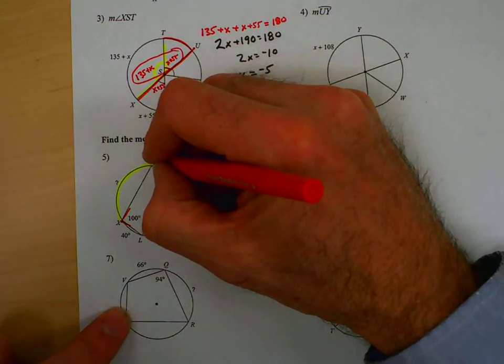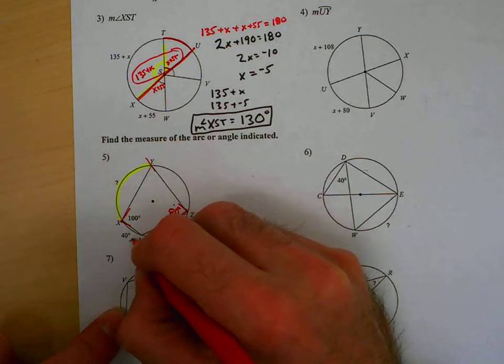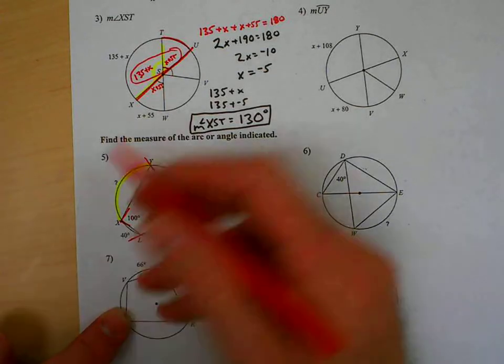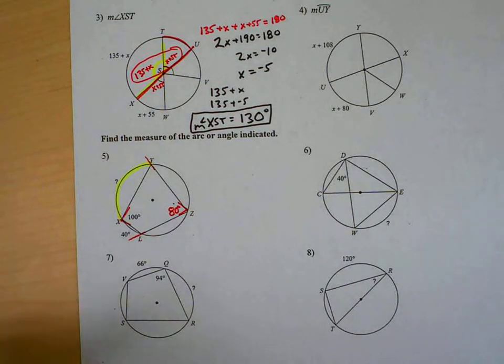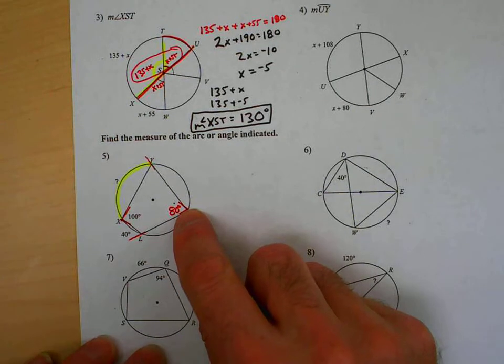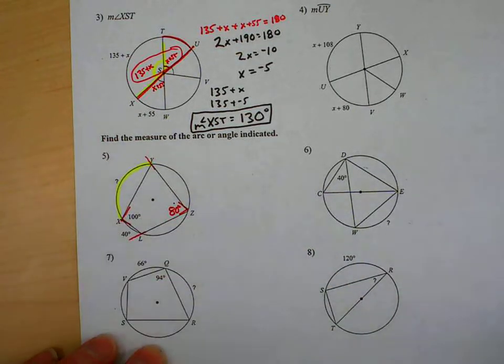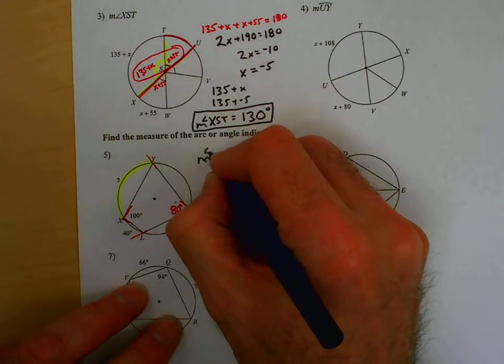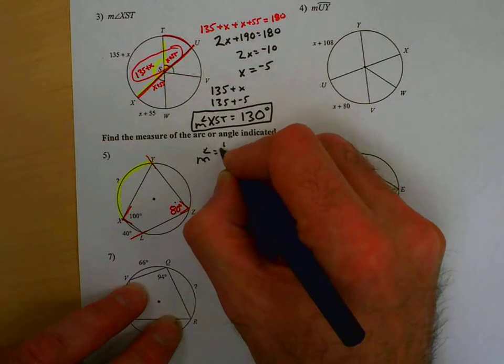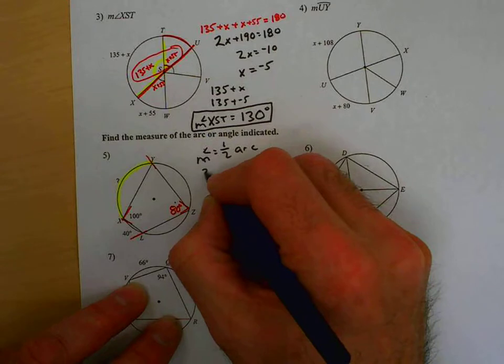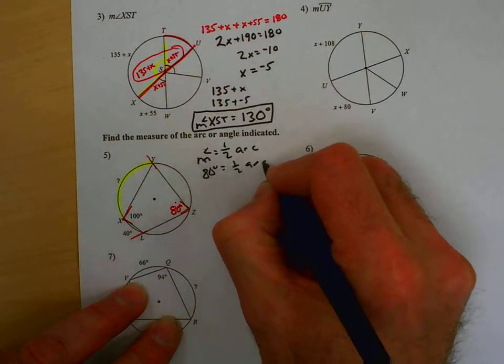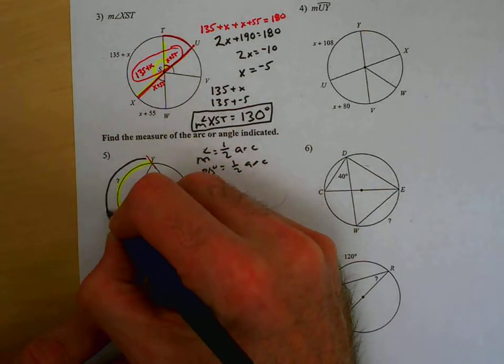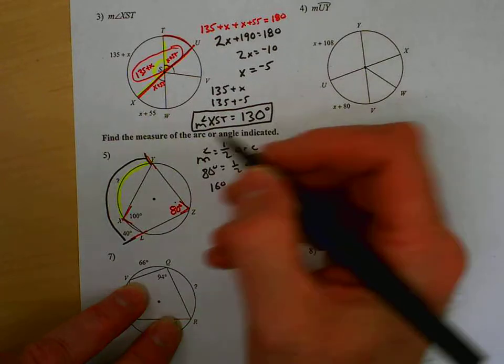And that angle, 80 degrees, intercepts here, this arc, LXY. And that's really LXY. So, the LXY is going to be twice this angle because we have that measurement. The measurement of the angle, if it's on the circle, equals half the arc. Well, the angle is 80 degrees, multiply both sides by 2, you get 160. So, this, from here to here, is 160.